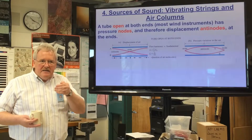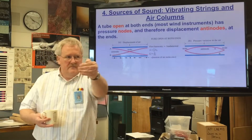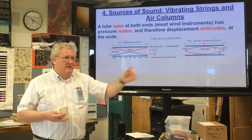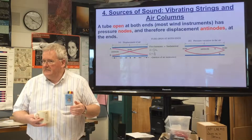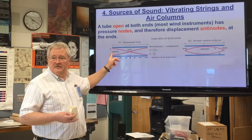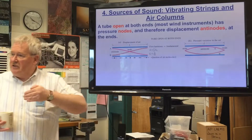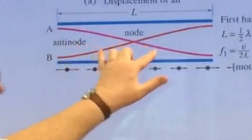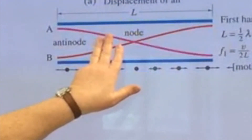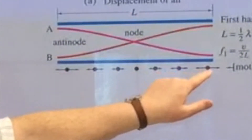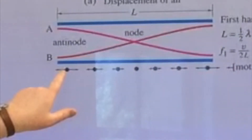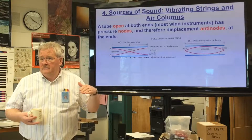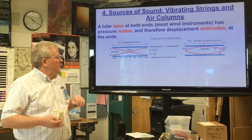Looking at the displacement of the air — the air moving like this — at the ends there's nothing to stop the air from actually moving freely. That's how we get the sound, because sound is periodic vibrations of the air. If you're displacing the air, that's effectively what the vibration is. The air is going in and out, almost like the membrane on a drum. This represents the magnitude of the displacement.